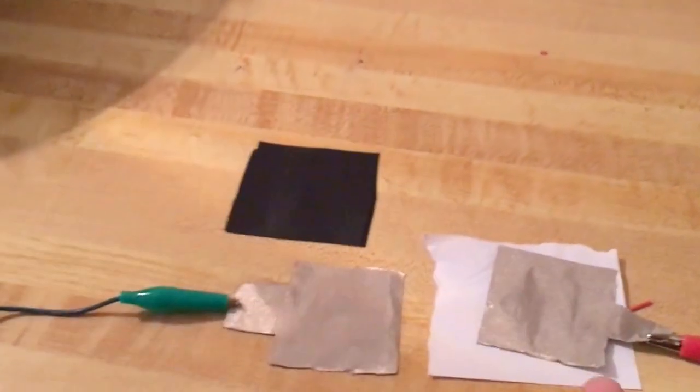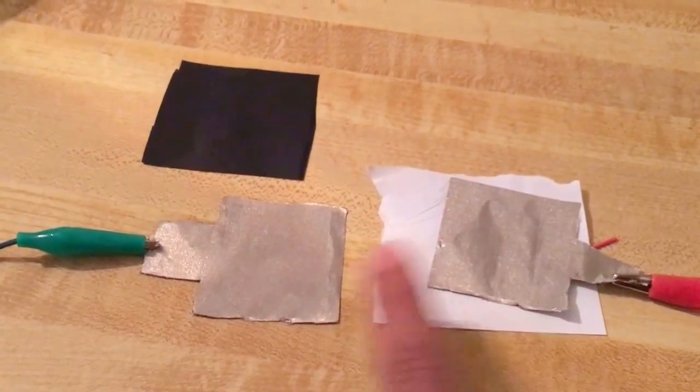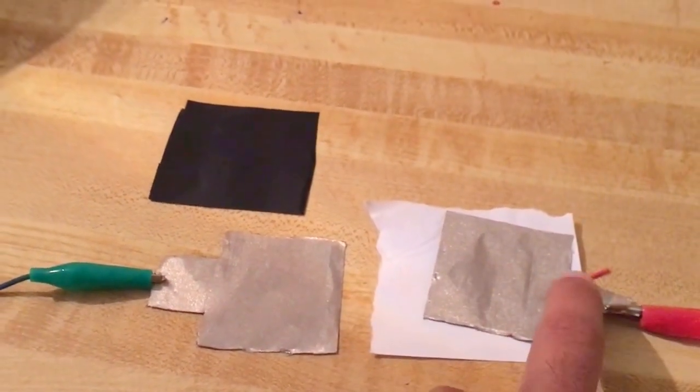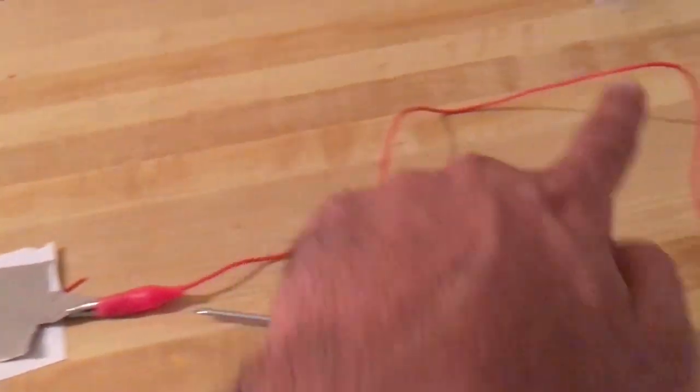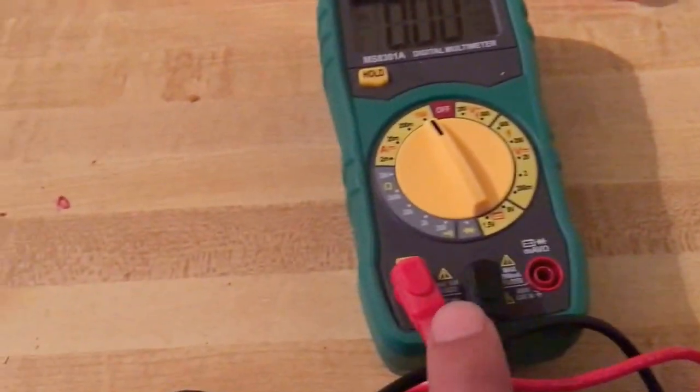You sandwich that in and then you have a duplicate conductive fabric on the other end and I connect that conductive fabric to an alligator clip that then goes and wires back into my multimeter from the other side.